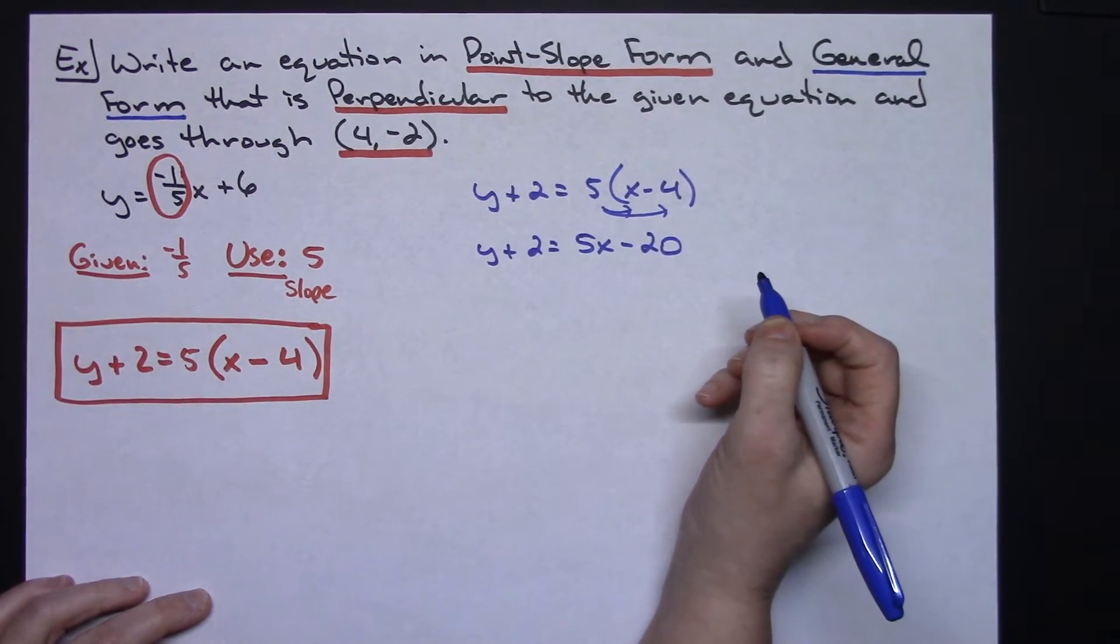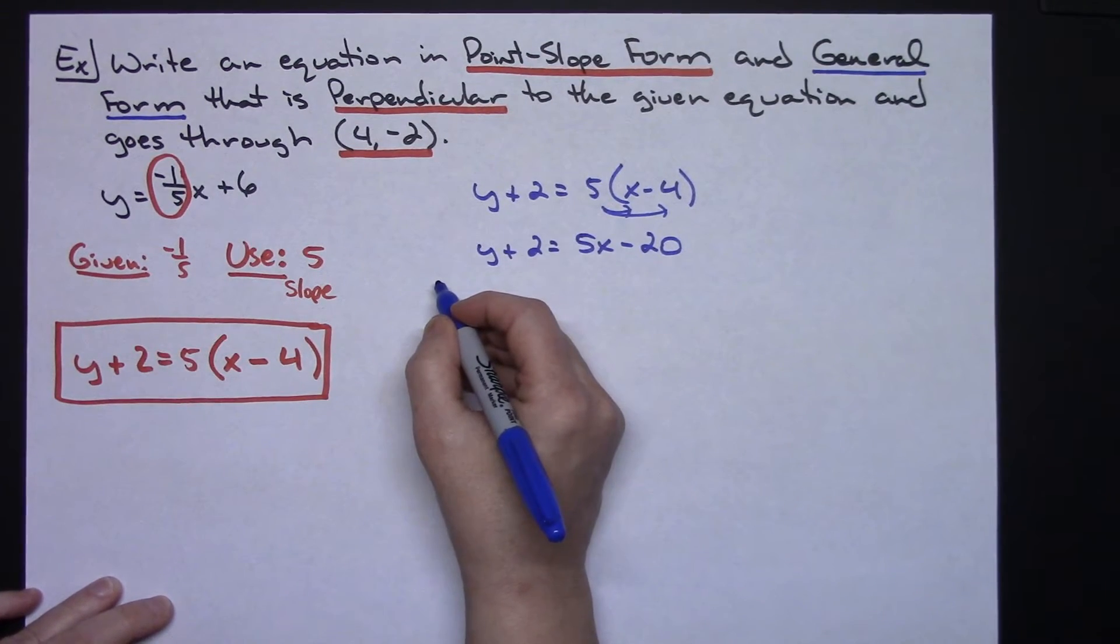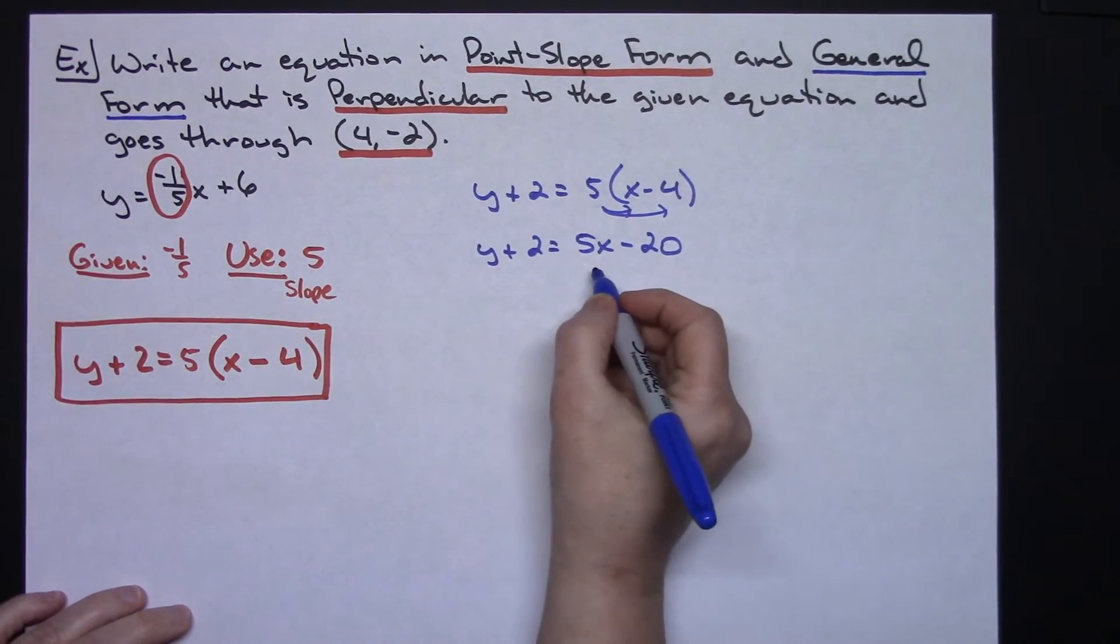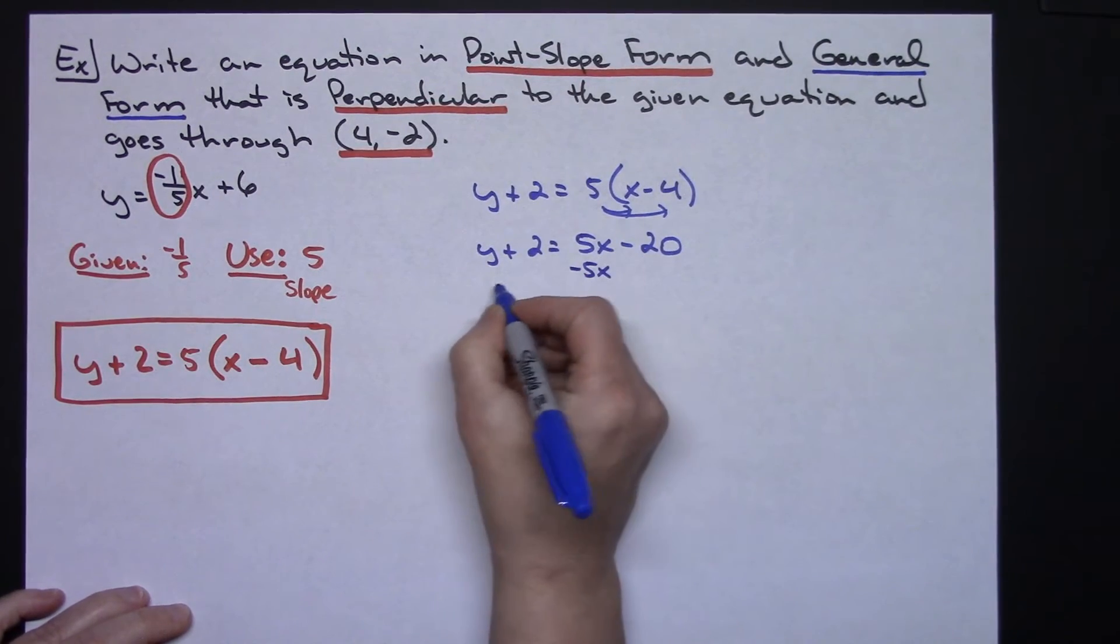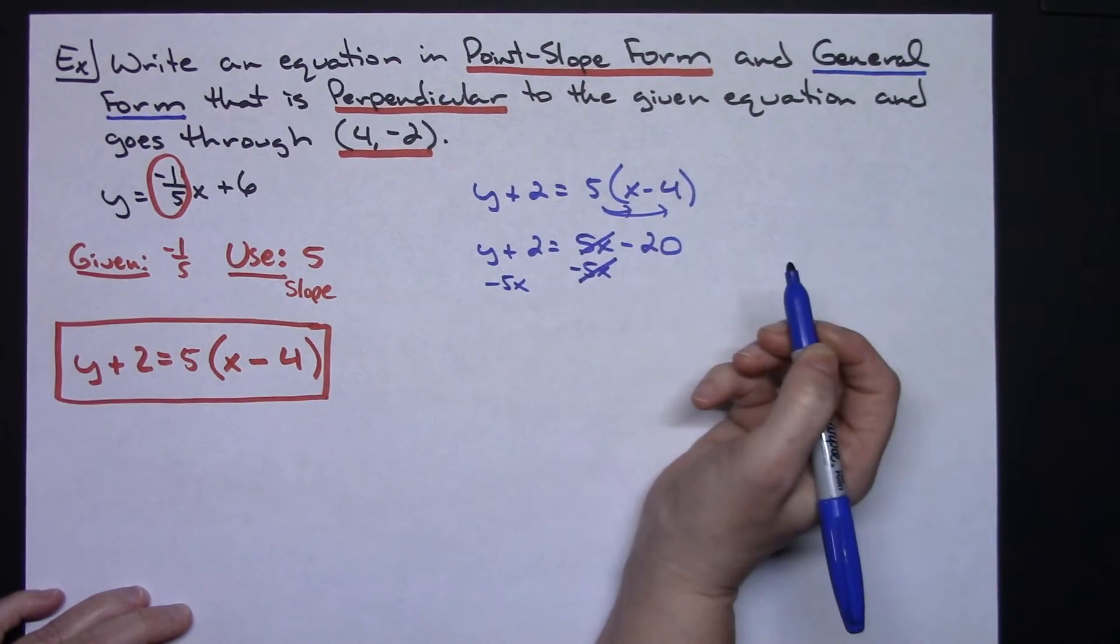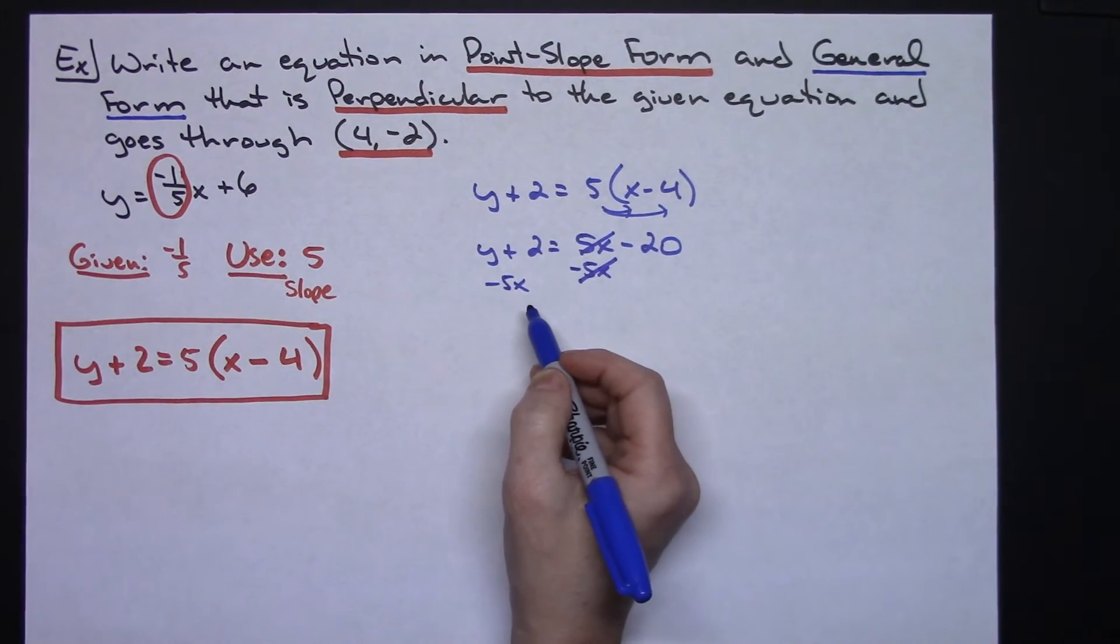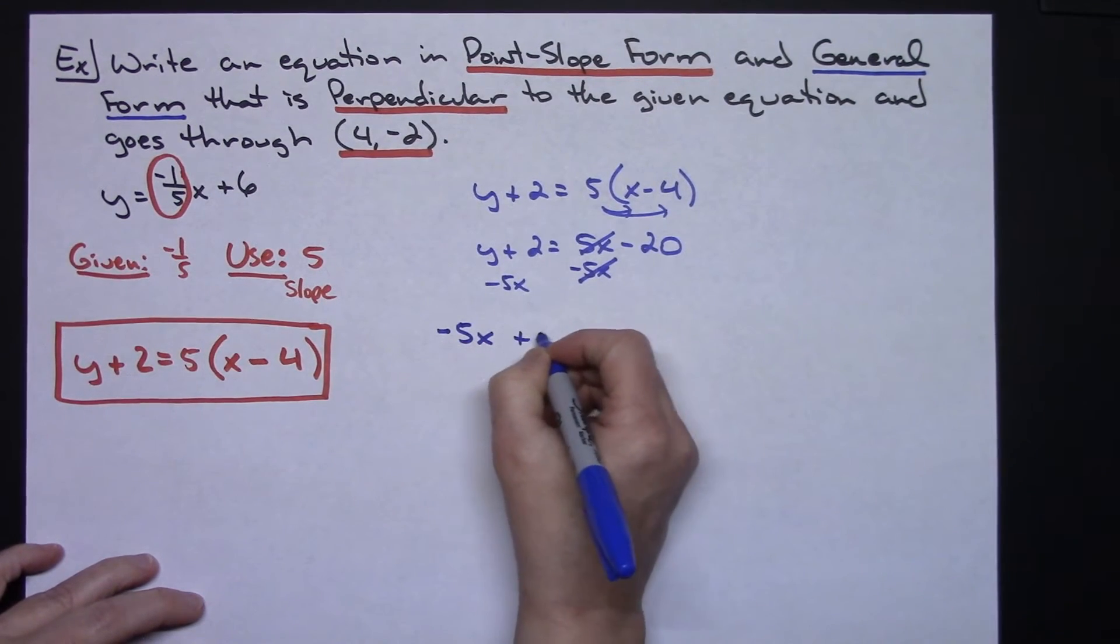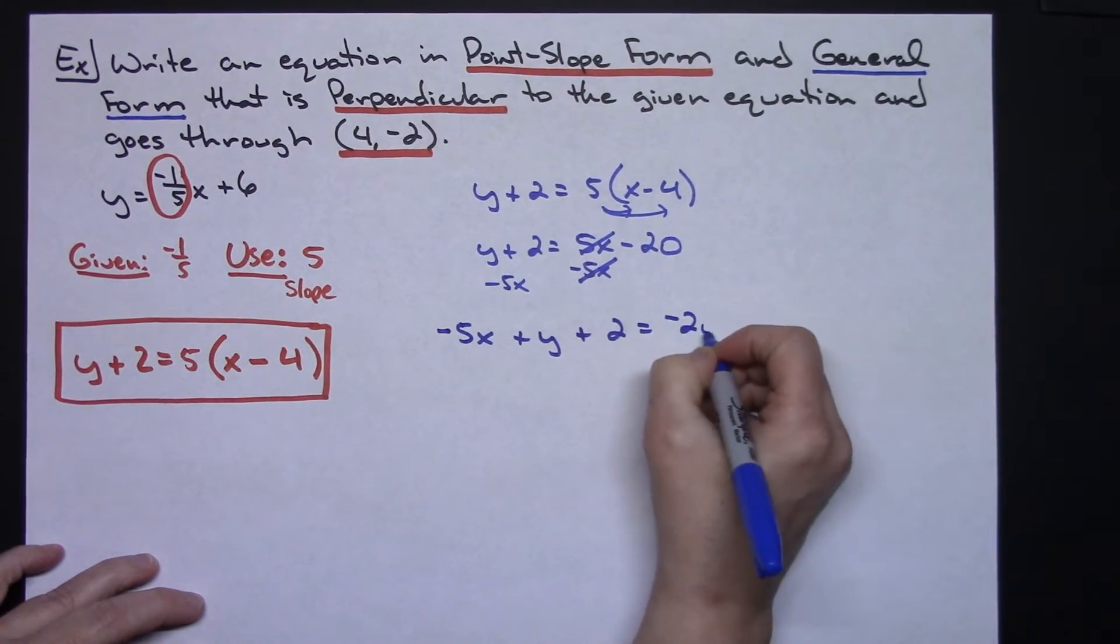Then for general form I need both x and y on the left-hand side and I need all the extra numbers on the left-hand side as well. So first off I think we'll subtract 5x from both sides. We're going to subtract 5x over here. 5x minus 5x on the right-hand side is going to make it go away, and there is no like term already over there on the left-hand side. I'm going to put it in the order that I need it to be in. So negative 5x plus y plus 2 equals, don't forget the negative 20 right there.